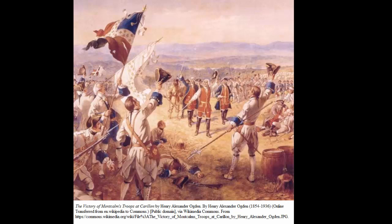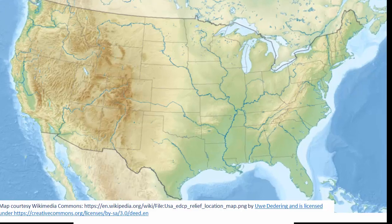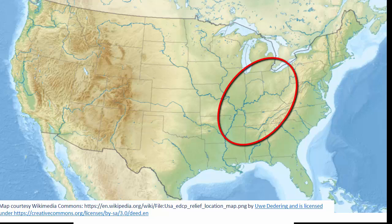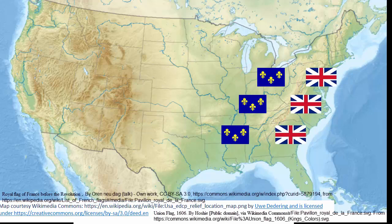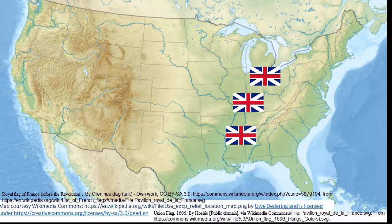The French and Indian War was a war between the British colonists and the French colonists over some prime land west of the Appalachian Mountains known as the Ohio River Valley. France had claimed that region for herself and said it was a part of New France, but the British colonists disputed that claim. Conflict ensued that was actually a part of a larger war between England and France called the Seven Years' War, and France lost. As a result, France lost her claim on that land, and the colonists felt that they could now settle it.